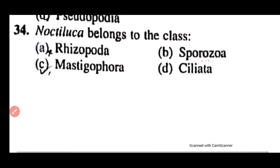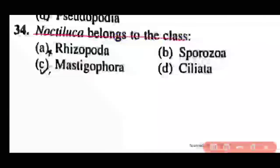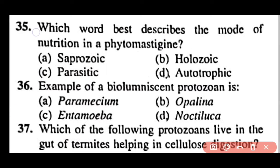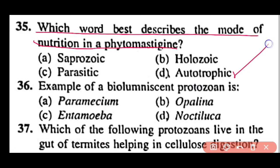Question 34: Noctiluca belongs to class Rhizopoda, Sporozoa, Mastigophora, or Ciliata? Correct answer is option C. Noctiluca belongs to class Mastigophora, phylum Protozoa. Question 35: Which word best describes the mode of nutrition in phytomastigophora — saprozoic, holozoic, parasitic, or autotrophic? Correct answer is option D. Autotrophic mode of nutrition is present in phytomastigophora.